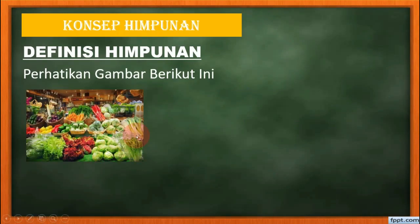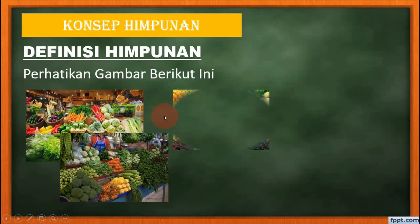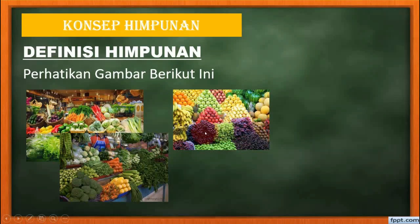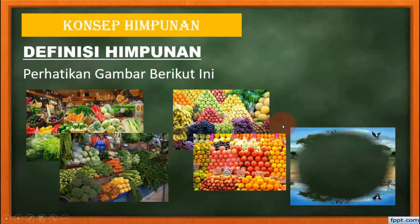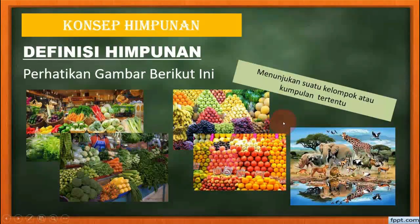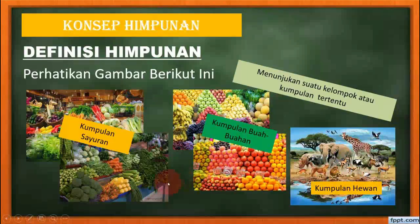Yang pertama adalah gambar sayur-sayuran. Di sini banyak sekali jenis sayur-sayuran dan semuanya terkumpul dalam satu jenis yang sama. Kemudian buah-buahan, begitu pula dengan buah-buahan. Dan terakhir adalah hewan-hewan. Ini menunjukkan suatu kelompok atau kumpulan tertentu: kumpulan sayuran, kumpulan buah-buahan, dan kumpulan hewan.